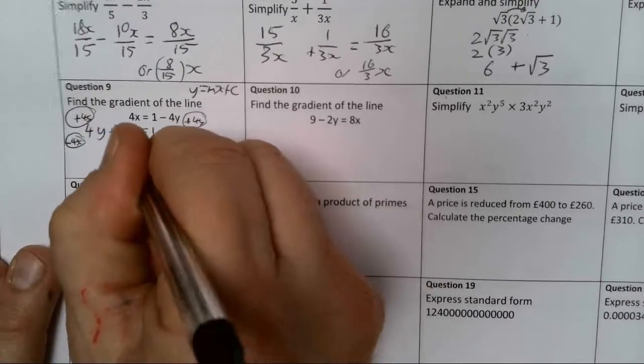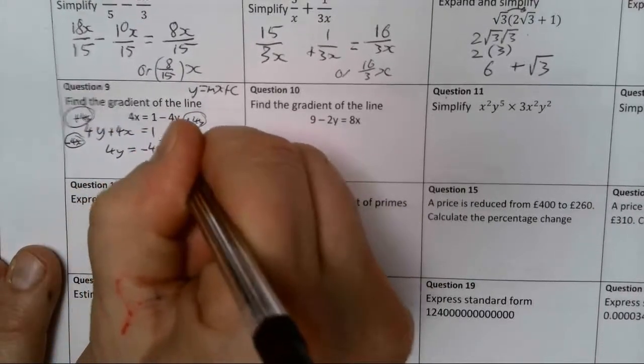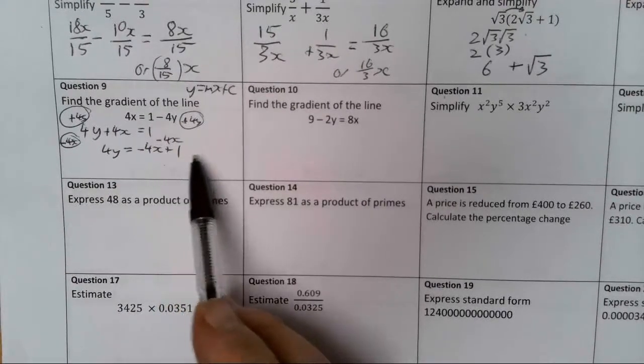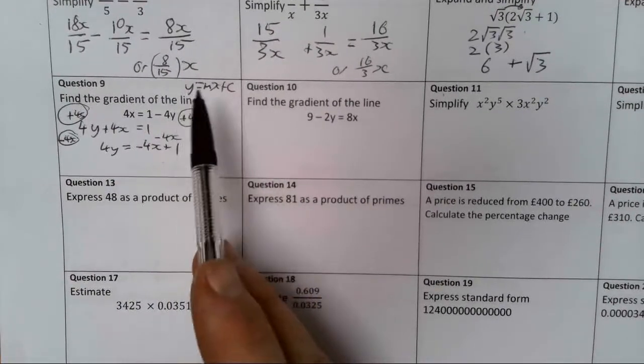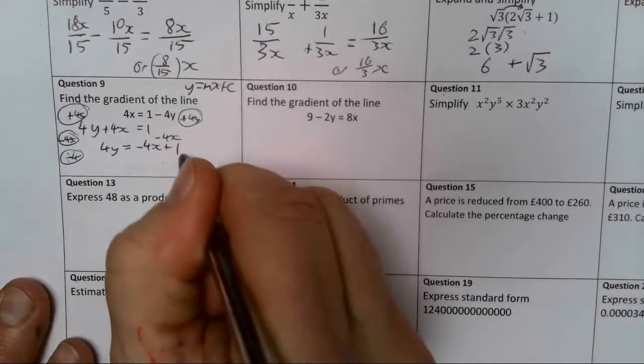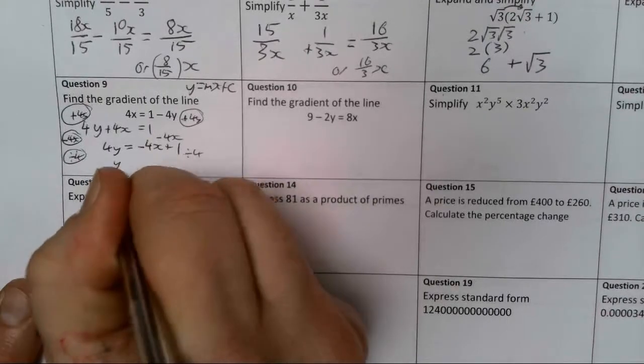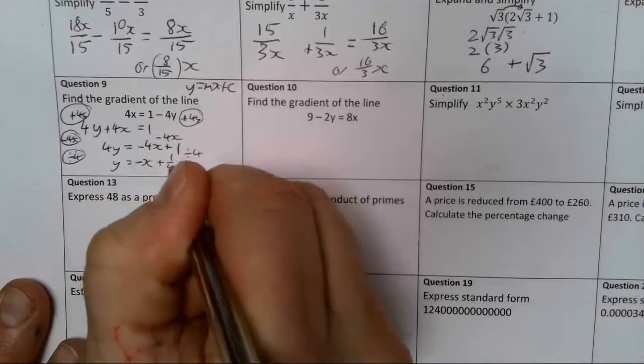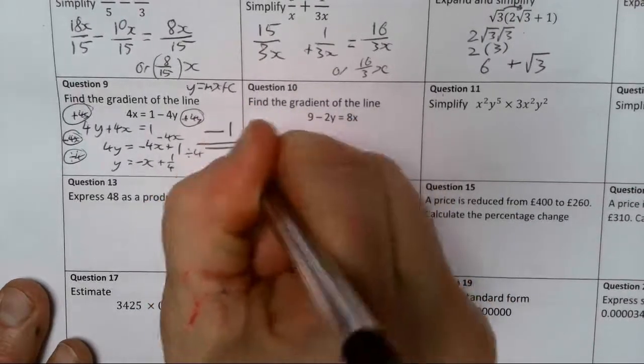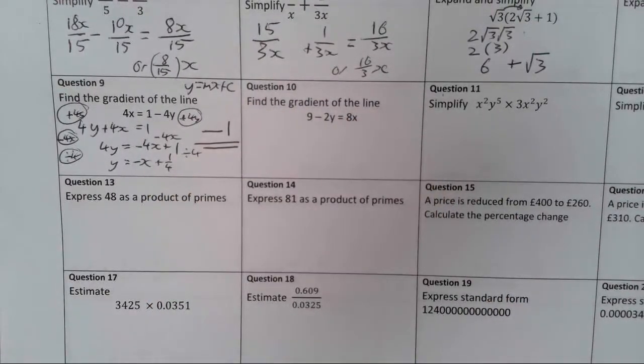So 4y equals minus 4x plus 1. Instead of doing 1 take away 4x, I've written minus 4x plus 1, just so it matches the y equals mx plus c format. Then I'm just going to divide by 4 both sides. So it gives me y equals minus x plus 1 quarter. Minus x means that my gradient is minus 1, minus 1 lot of x.